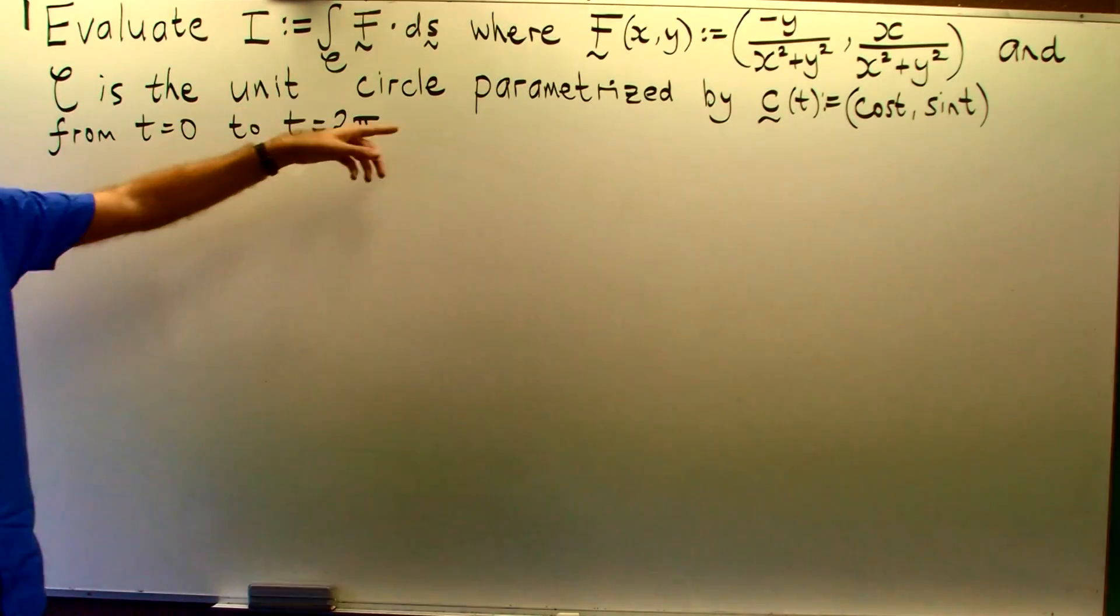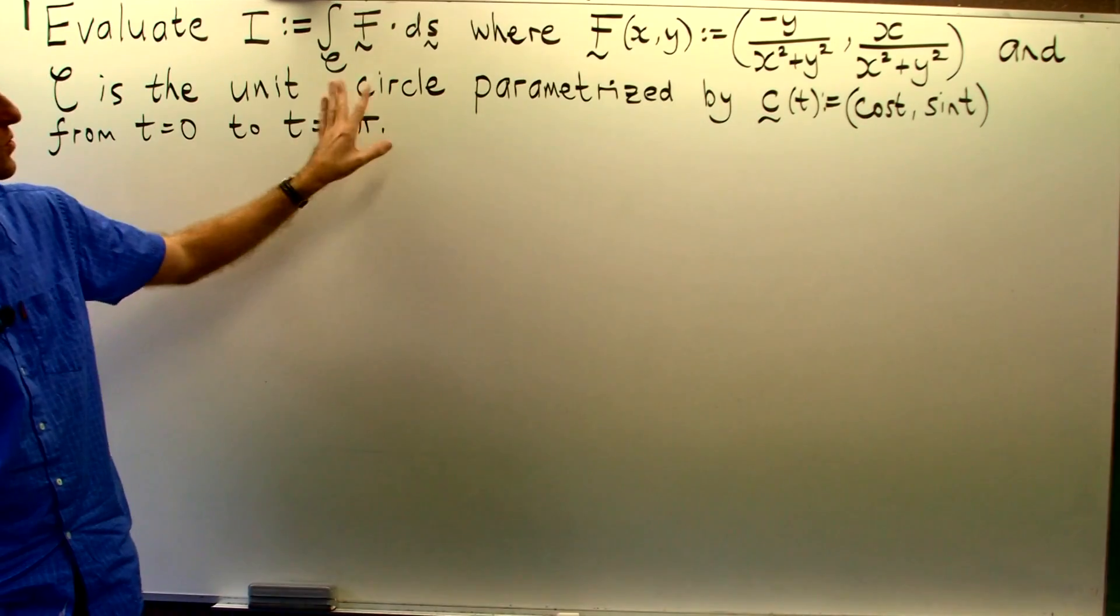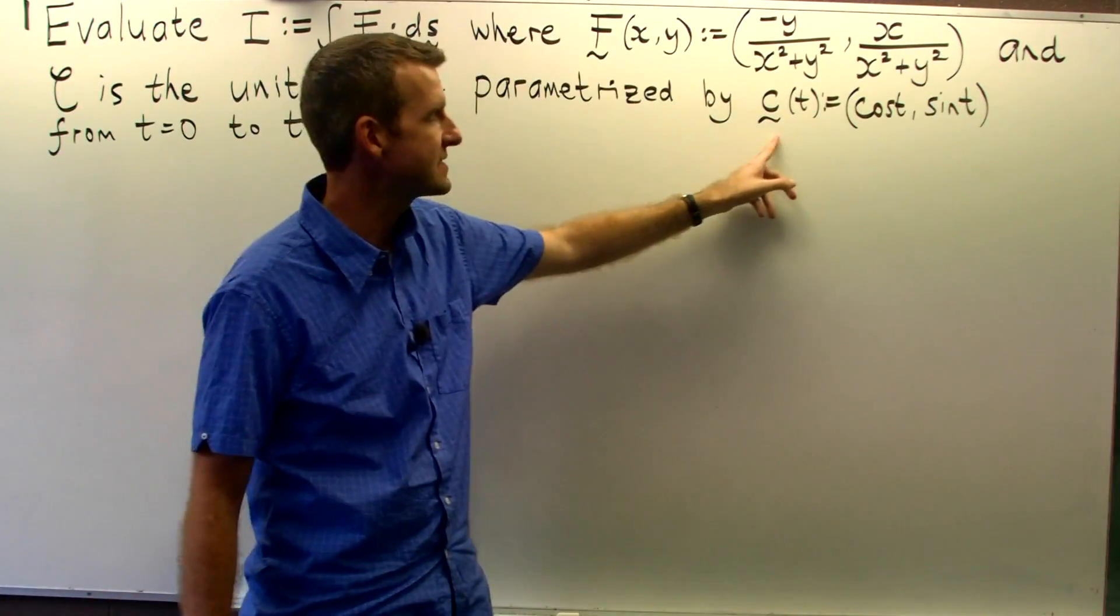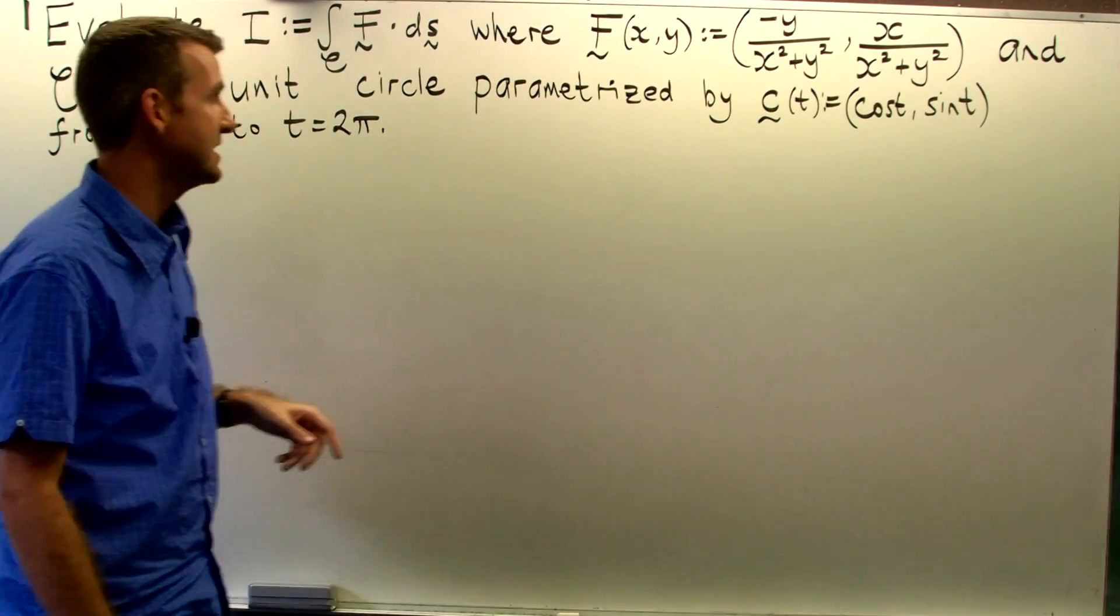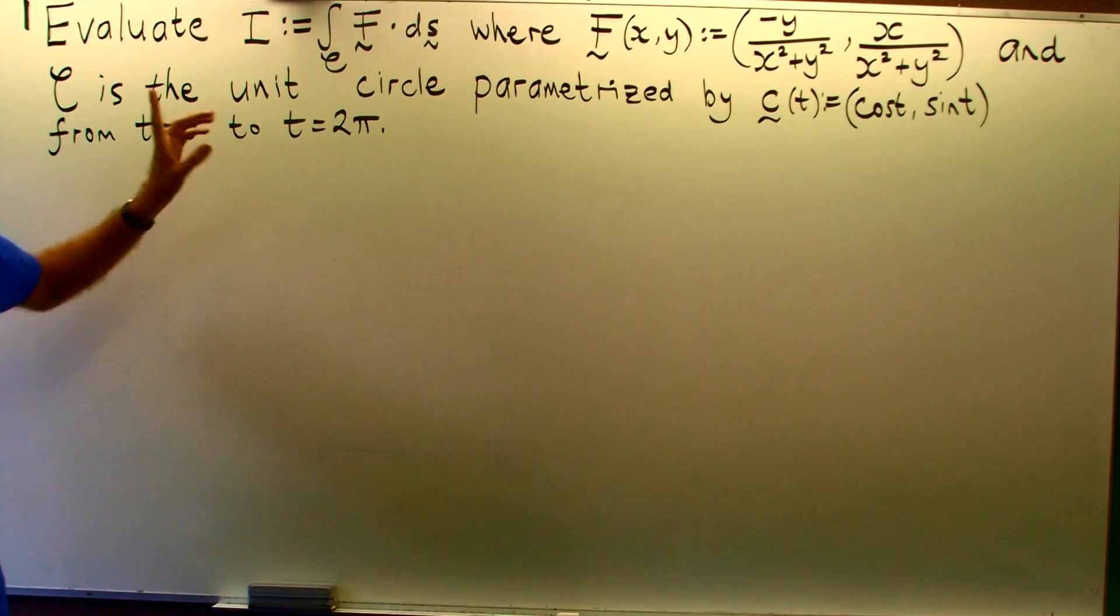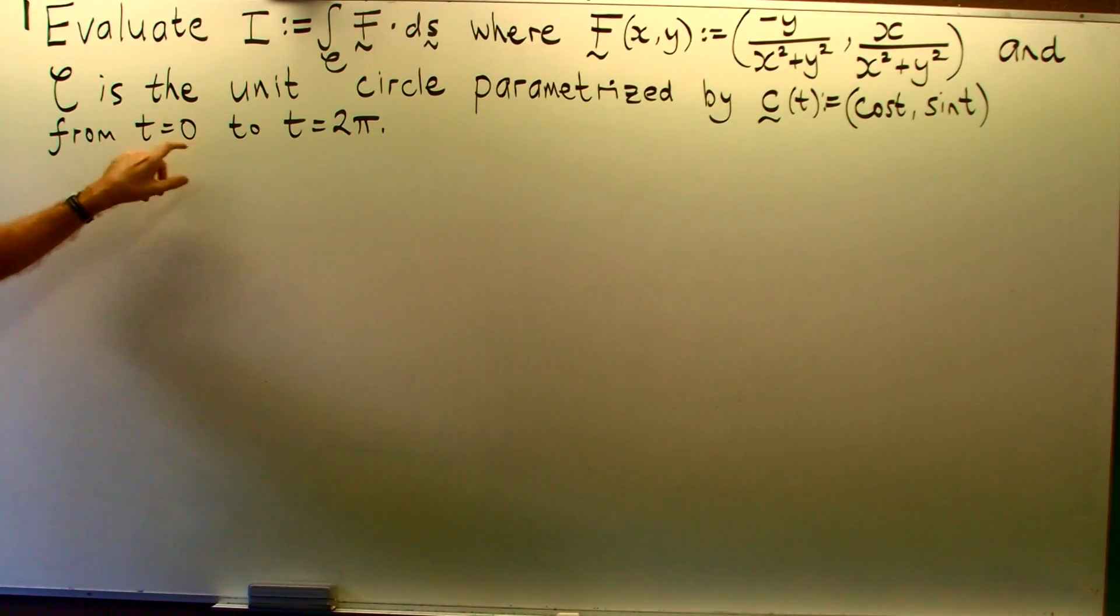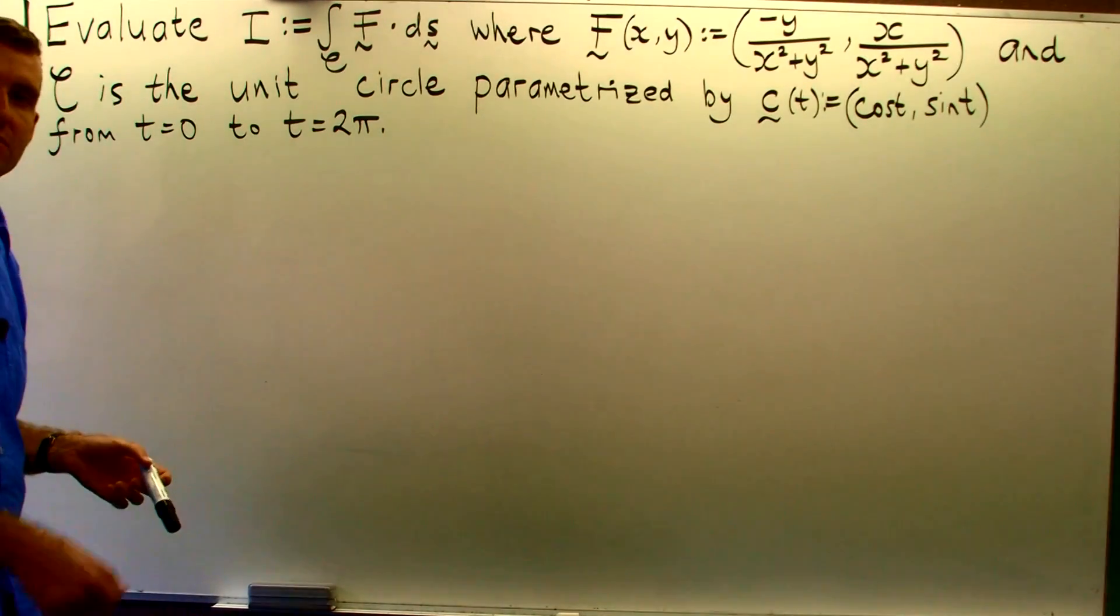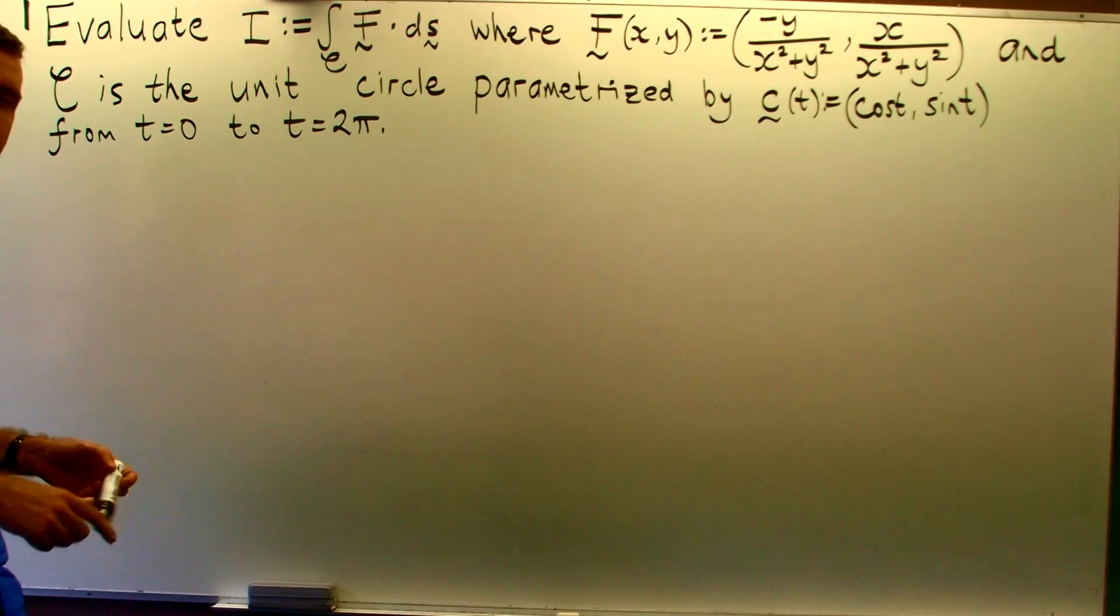Now this curly c is the unit circle and we can describe this particular unit circle through this parameterization, this vector function here. And the motion that we trace out starts at t equals 0 and goes to t equals 2 pi. So the direction would be in an anti-clockwise direction along the unit circle.